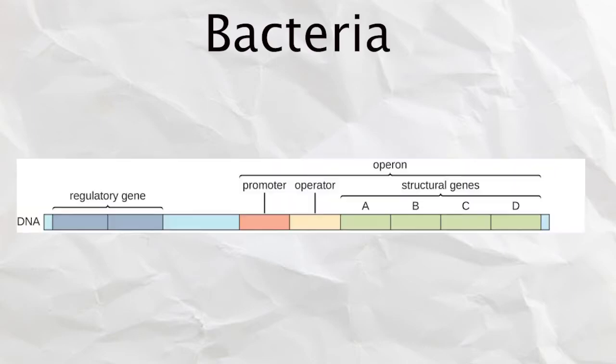This video will go over gene structure of bacteria versus eukaryotes. Bacteria have a simple gene structure. RNA polymerase binds to the promoter if there is no protein blocking it on the operator part of the gene.